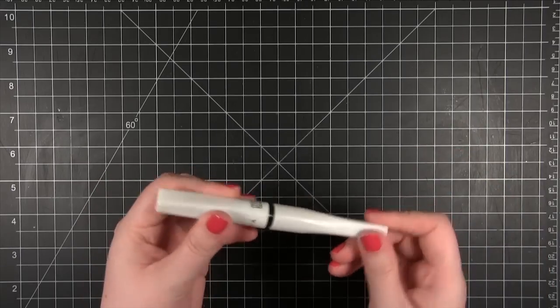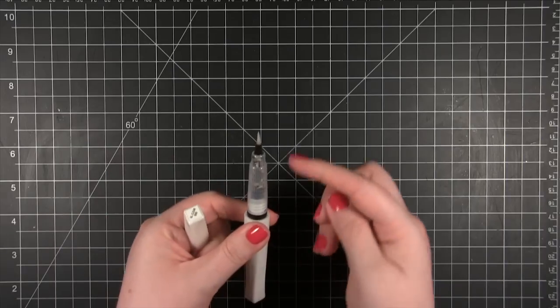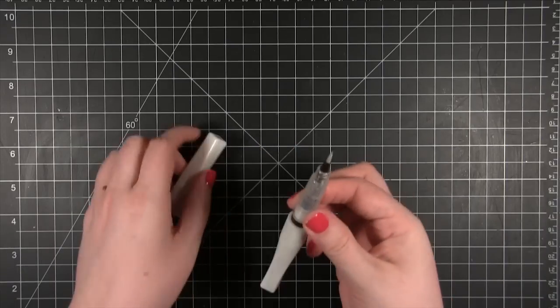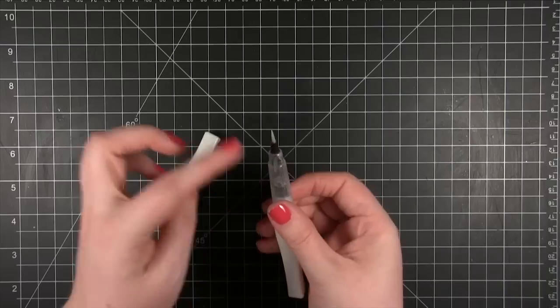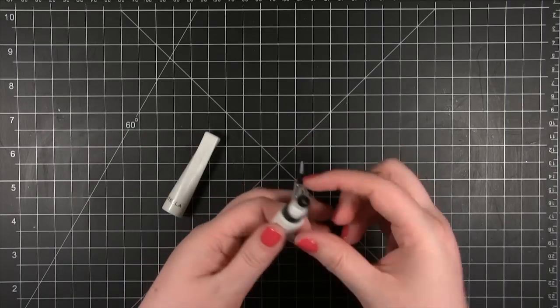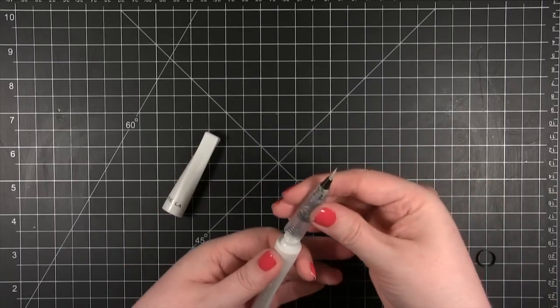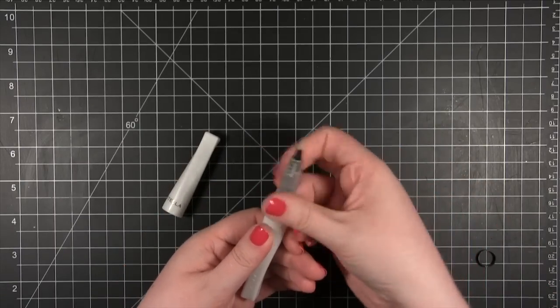When your brush pen comes it's going to have this little black ring right here in the middle. You're going to take the cap off. Mine's already been primed and it works so yours will actually be all clean up here. What you'll do is you'll unscrew the brush part, take the black ring off, and then screw the brush back on.